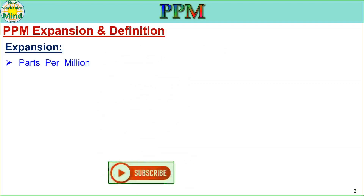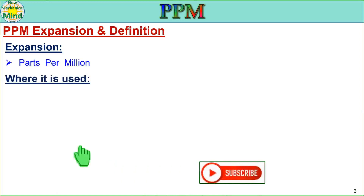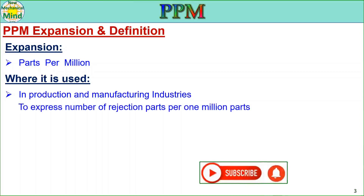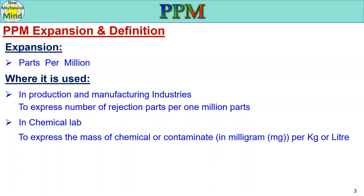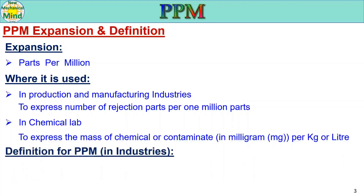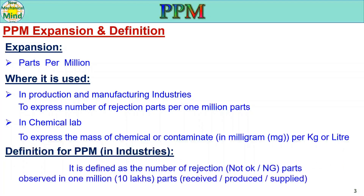PPM is used in production and manufacturing industries to express the number of rejection parts per 1 million parts. In chemical labs, it is used to express the mass of a chemical or contaminant in milligrams per kilogram or liter, but we are going to see about industrial PPM only. In industries, PPM is defined as the number of rejections — that is, not-okay or not-good parts — observed in 1 million (10 lakh) parts received, produced, or supplied.